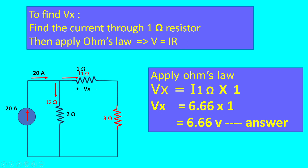Now we find Vx by applying Ohm's law: V = IR. The current through the 1 ohm resistance is 6.66 amps, and the resistance is 1 ohm, so Vx = 6.66 × 1 = 6.66 volts. This is our first answer.